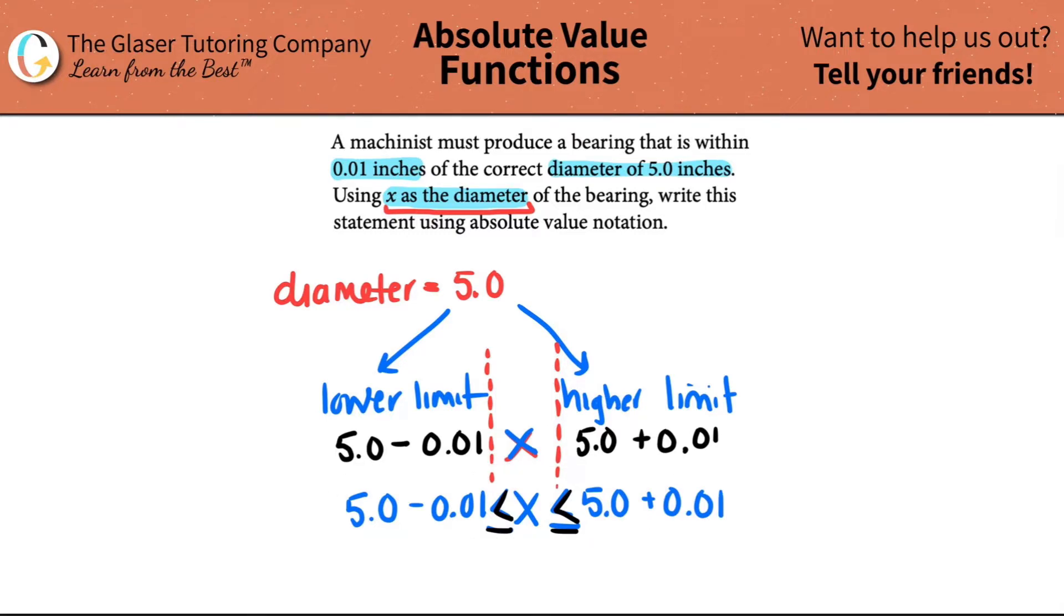Okay, now all we have to do is we just have to transfer this into an absolute value notation. So the first thing is that, remember, with absolute values, you will always get out the higher number, right? Because absolute values, whatever is inside, will always give you out the positive answer.